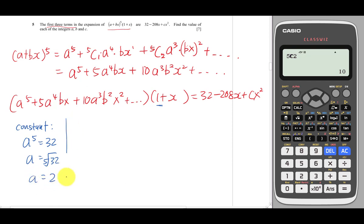Then I'll compare the coefficient of x^1. Which terms give x^1? If a^5 multiplies x here, that gives x^1. If 5a^4·bx multiplies 1, that also gives x^1. So there are two terms here.